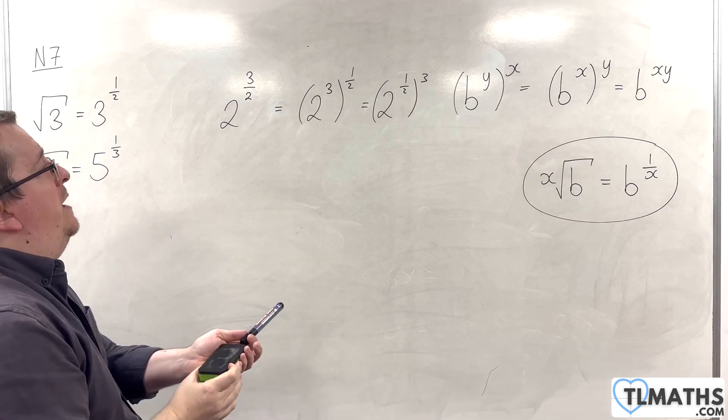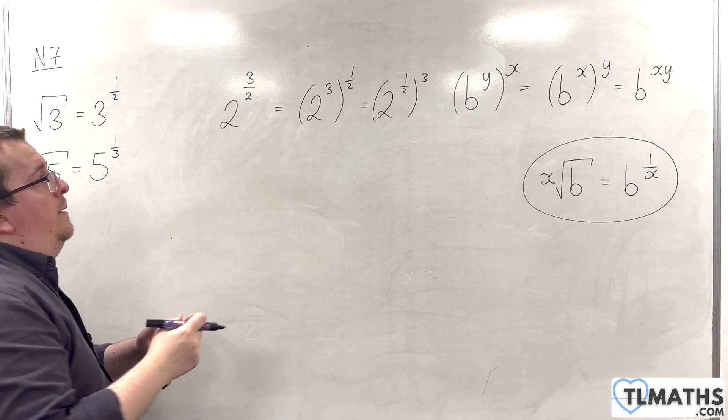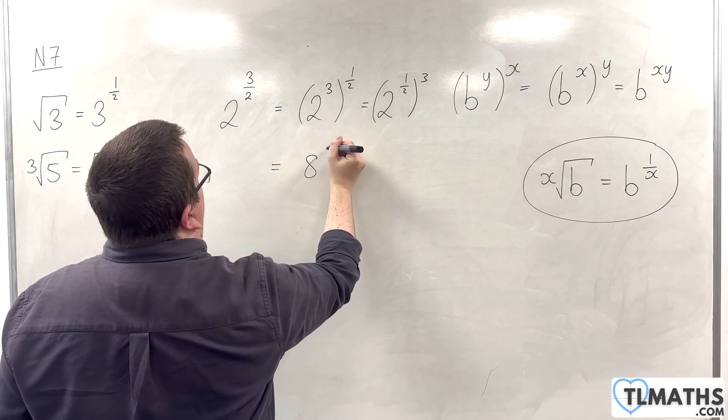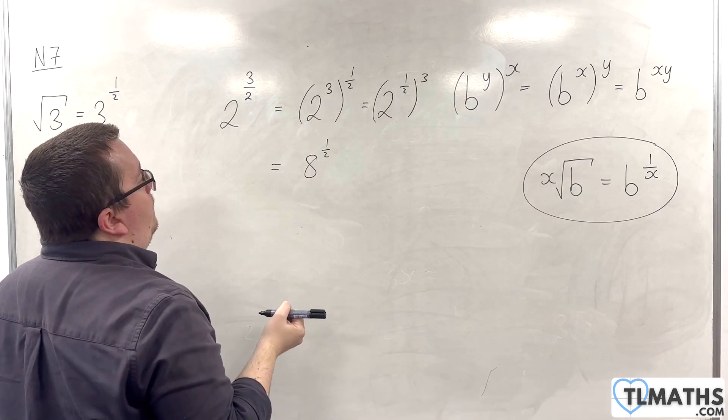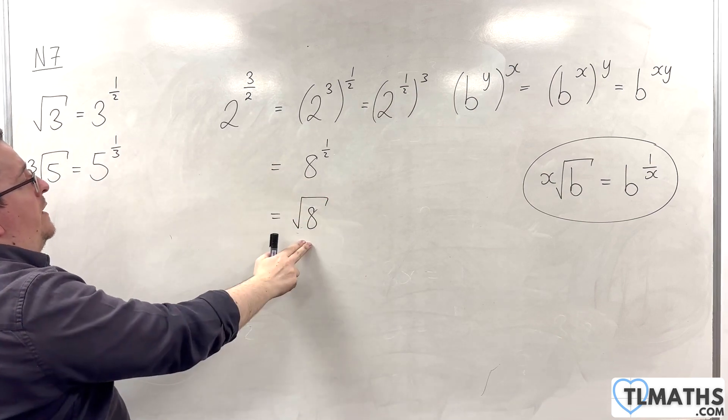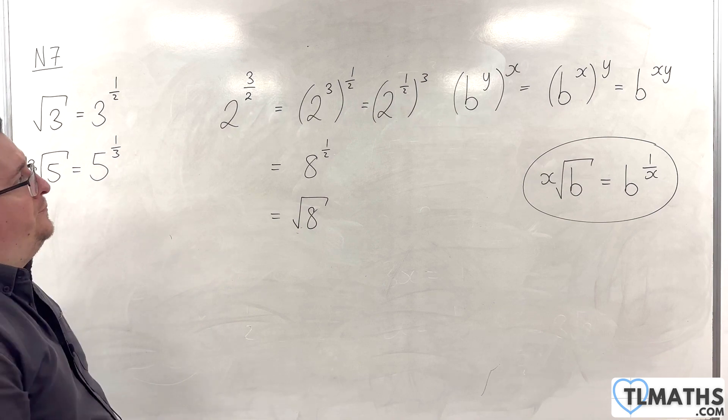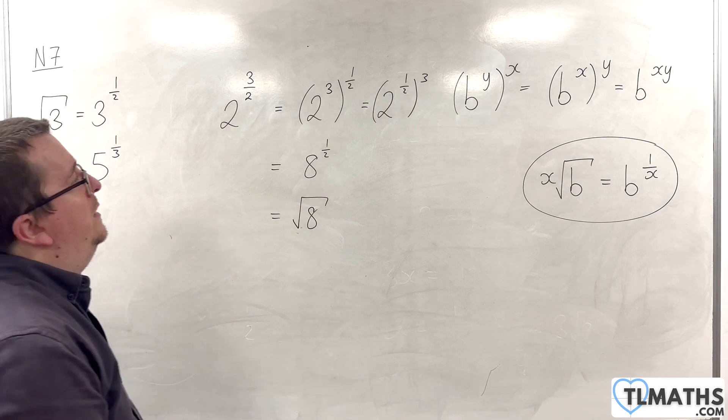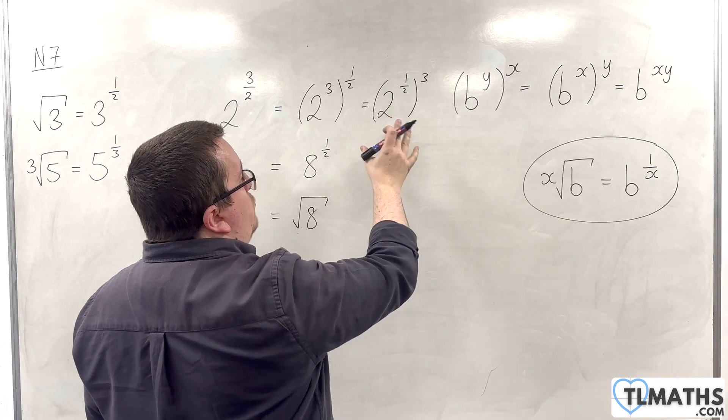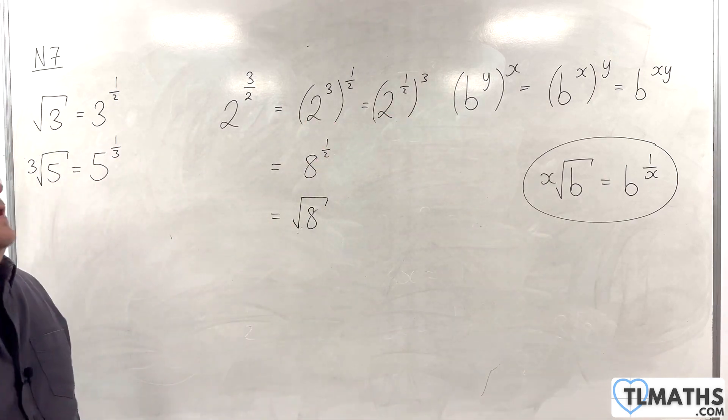So, 2 to the power of 3 halves being the same as 2 cubed to the power of 1 half is the same as 8 to the power of 1 half, or the square root of 8. These two things have to be the same. Which is the same as 2 to the power of 1 half cubed. So, root 2 cubed, if you like.